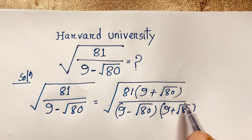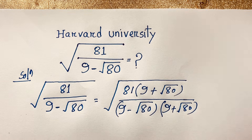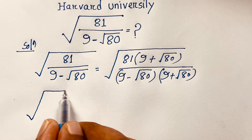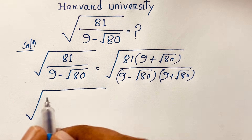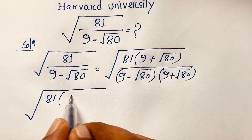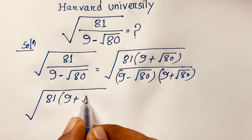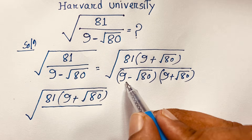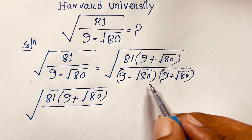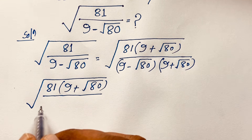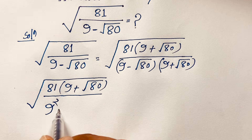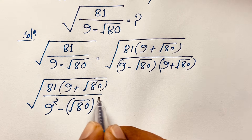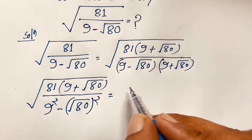Now the conjugate terms cancel out in the denominator. We apply the identity (a+b)(a-b) = a² - b², so the denominator becomes 9 squared minus (square root 80) squared, which is 81 minus 80.